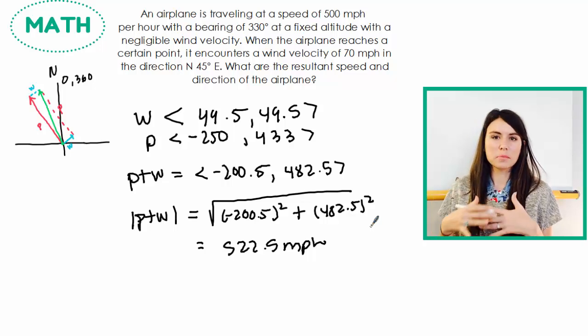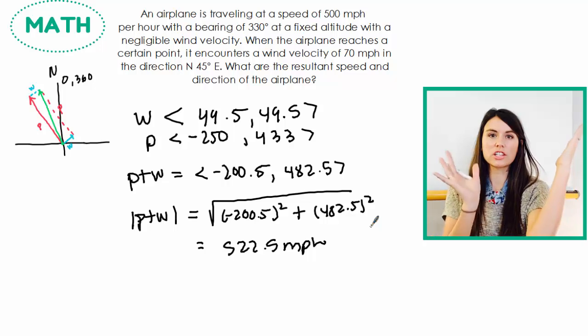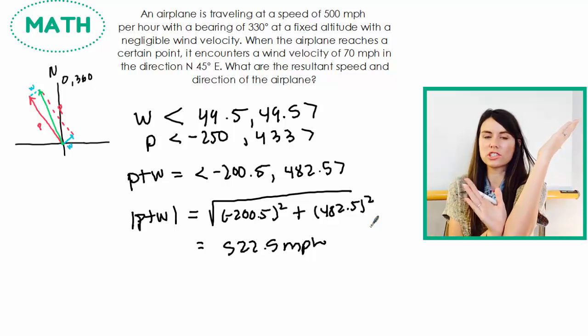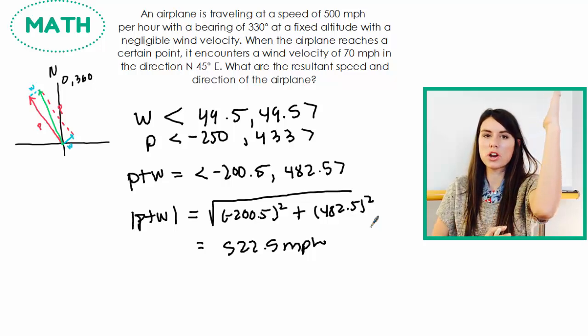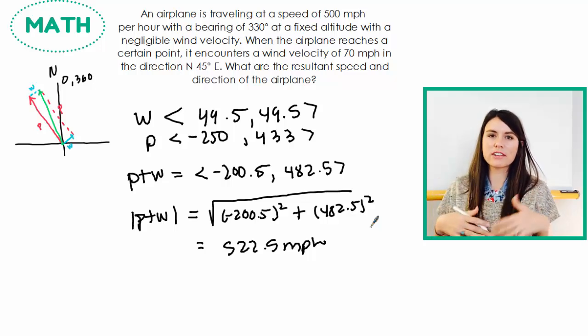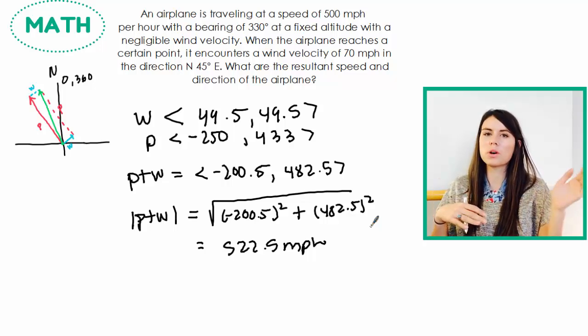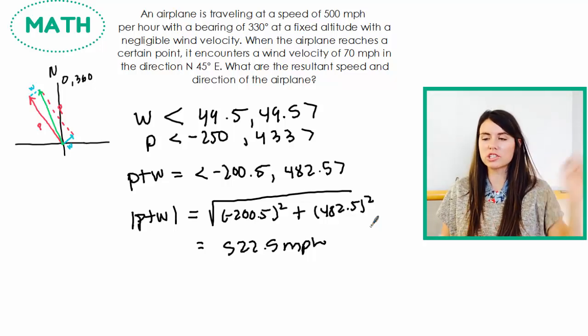So what that means, like putting this into context, you have an airplane that's traveling this direction and the wind is going this direction. So the wind makes it go faster, but it also pushes it more north, which if you're traveling in an airplane and you're trying to get from A to B, you probably don't want to go more north.